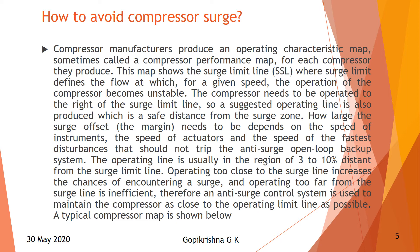Compressor manufacturers produce an operating characteristics map, sometimes called a compressor performance map. Each compressor manufacturer will give a performance curve for each compressor, at which particular limit you will get maximum performance if you maintain all parameters correctly. The surge limit defines the flow at which, for a certain speed, the operation of the compressor becomes unstable. The compressor needs to be operated to the right of the surge limit line. A suggested operating line is also produced which is a safe distance from the surge zone.